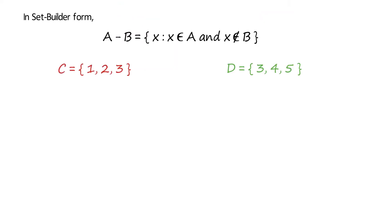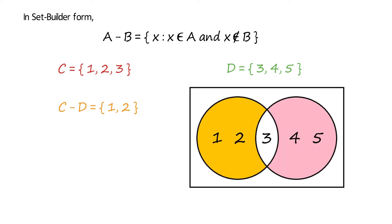Let's see an example. Consider the sets C and D as shown. C minus D includes the elements 1 and 2, since both elements belong to C but not D.